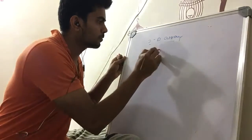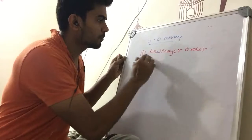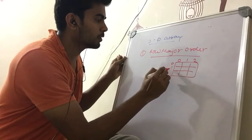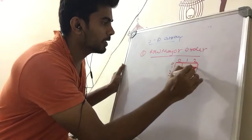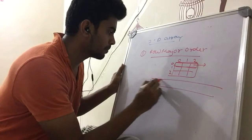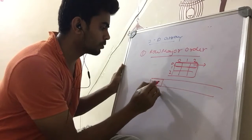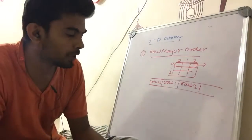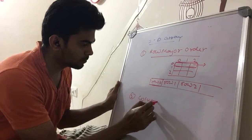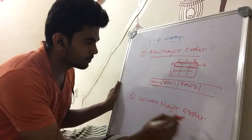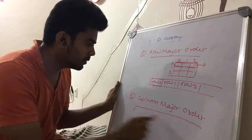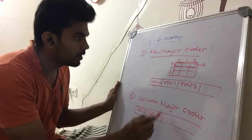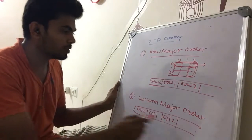In row major order, if you have an array with rows 0, 1, 2 and columns 0, 1, 2, you take the first row and store it in the memory tape as row 0, then row 1, then row 2. In column major order, you take the same array but store column 0 first, then column 1, then column 2 — that's how column major order works.